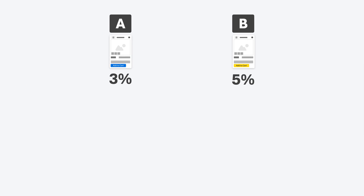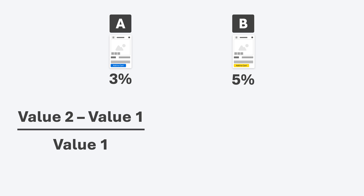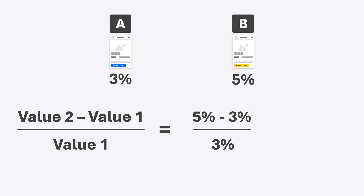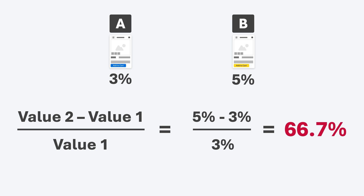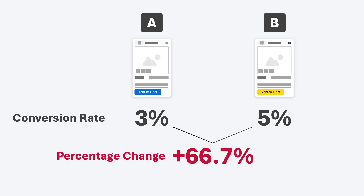If we jump back to our example with our two pages and apply these numbers, we're going to get 5% — which is value 2 — subtract 3%, then divide by 3%. So this is 2 over 3, or two-thirds, which is 66.7%. We can compare the conversion rates with the percentage change formula and see that page B is drastically outperforming page A.